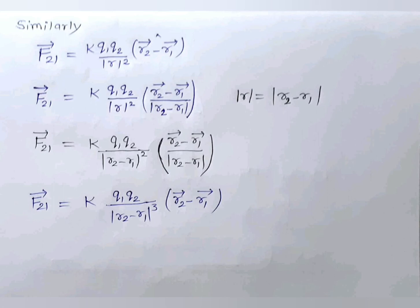Similarly, F21 can be written as: F21 = k·q1·q2 / |r2 − r1|² × (r2 − r1) / |r2 − r1|, where |r| = |r2 − r1|.